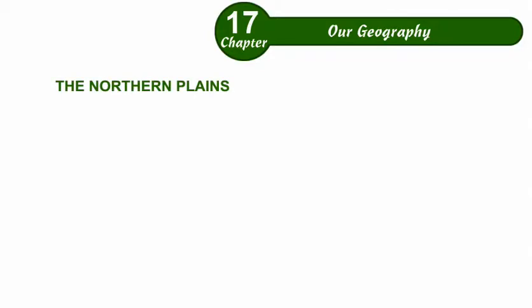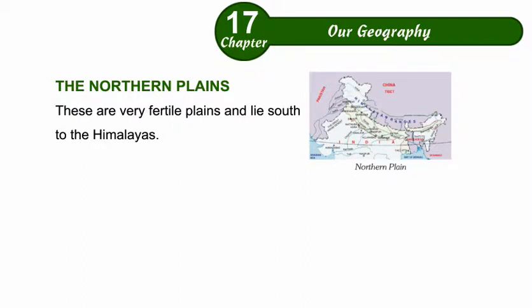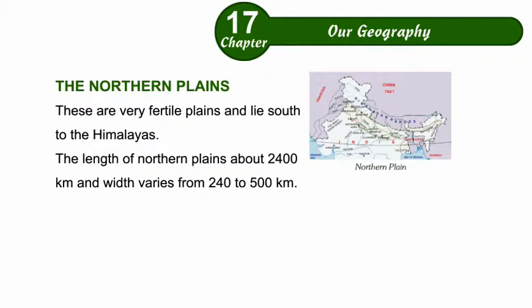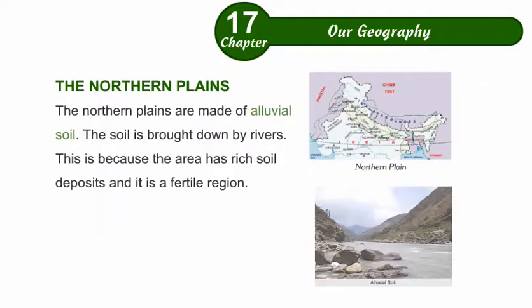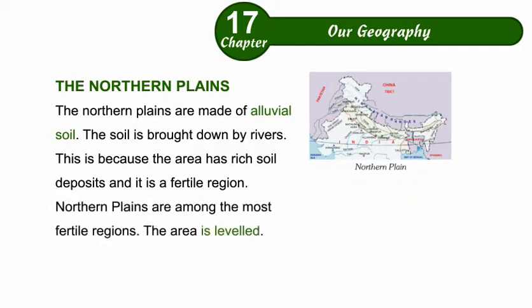The Northern Plains are very fertile plains and lie south of the Himalayas. The length of the Northern Plains is about 2400 km and the width varies from 240 to 500 km. They extend from Punjab in the west to Assam in the east. The Northern Plains are made of alluvial soil, which is brought down by rivers, making it a fertile region.